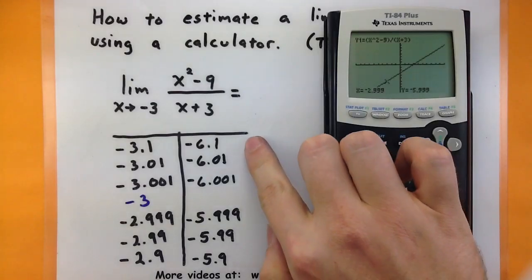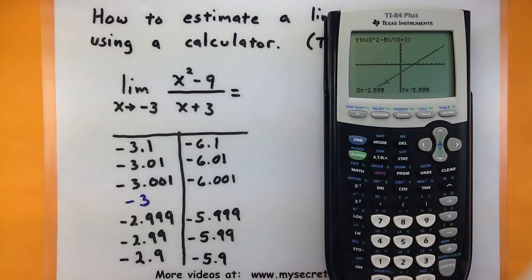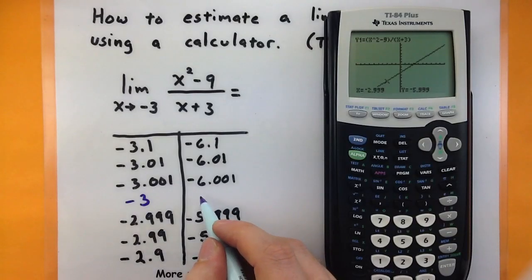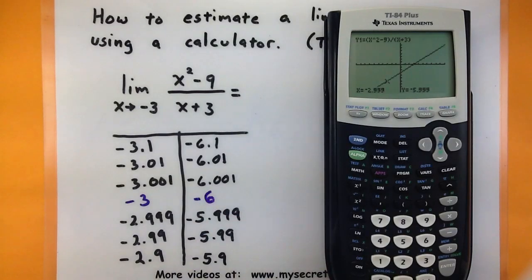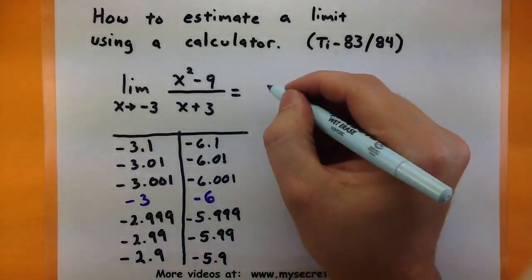So you can see that as we're choosing x values on the left side, it's getting close to negative 6. And as we're choosing x values on the right side, we're getting close to negative 6. So a good estimate as to what's happening as my x approaches negative 3 would be that our y values are approaching negative 6. So we will use that as an estimate for our limit.